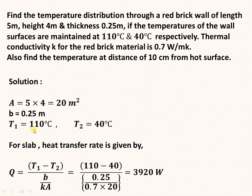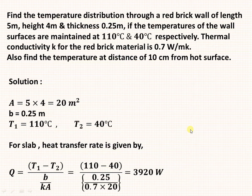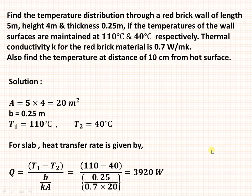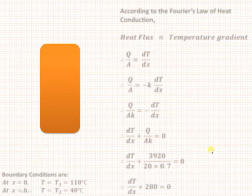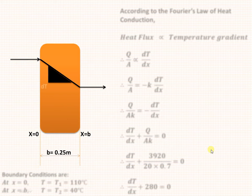At x equal to 0, the temperature is 110 degrees, and at x equal to 0.25 meters the temperature is 40 degrees centigrade. According to Fourier's law, the heat transfer rate is given by the temperature difference divided by the thermal resistance, and that value comes out to be 3920 watts. This value will be useful for solving the differential equation. These are the boundary conditions and this is the slope or gradient showing how temperature changes along the thickness of the slab.